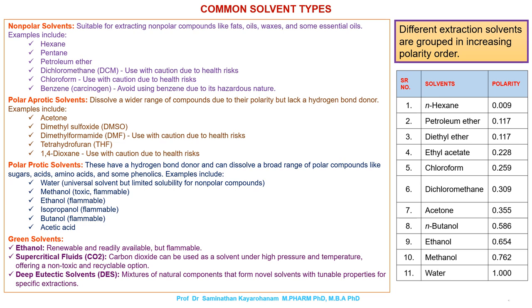Polar protic solvents have a hydrogen bond donor and can dissolve a broad range of polar compounds like sugars, acids, amino acids, and some phenolics. Examples include water — universal solvent but with limited solubility for non-polar compounds — methanol (toxic, flammable), ethanol (flammable), isopropanol (flammable), butanol (flammable), and acetic acid.